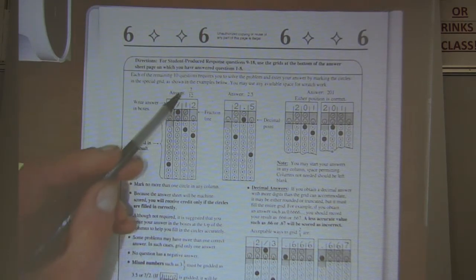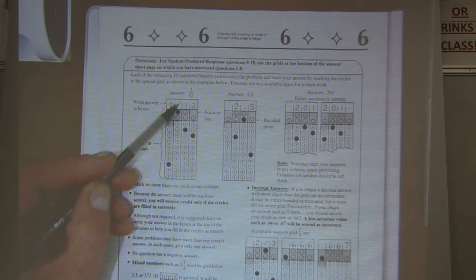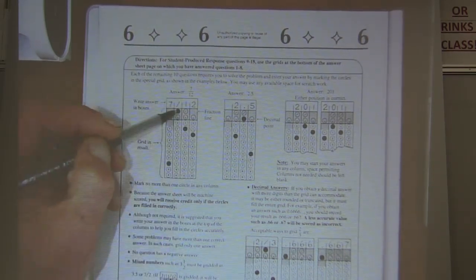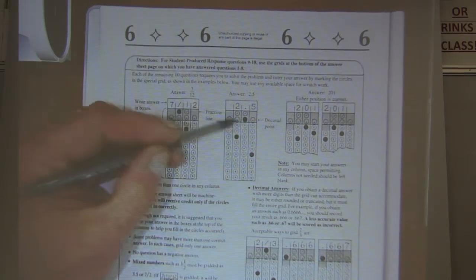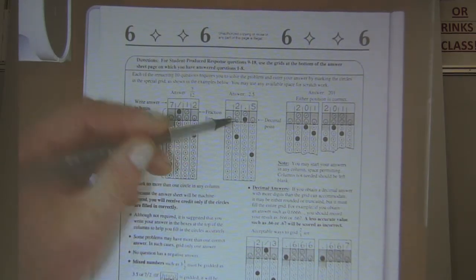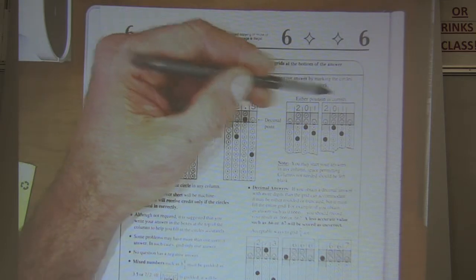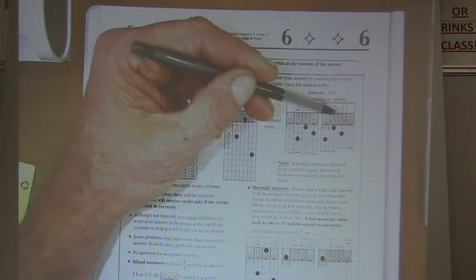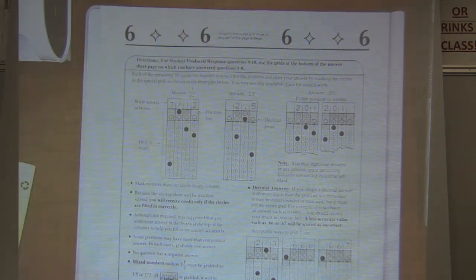For example, if you're gridding in the answer 7/12, so you do 7, fraction bar 12. For 2.5, you do it like that. And there's a fraction bar to bubble it in, there's a decimal to bubble it in. So notice if you get a three digit number, you can put the three digits over here, or you can put them on the left hand side. I'll show you when we get our answers how to bubble these in.